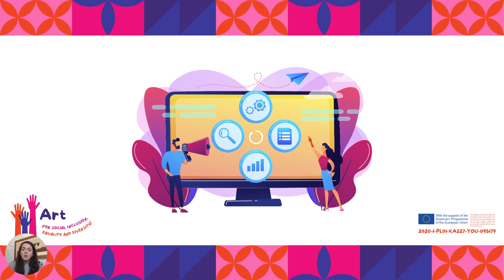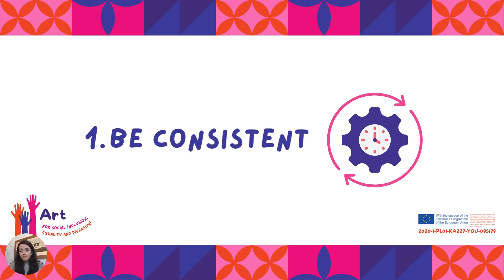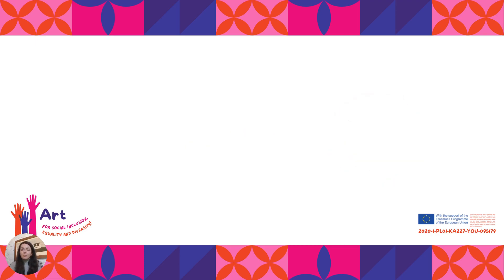Advocacy campaigns may sound daunting at first but they don't have to be. Let's check out some tips on how to build a successful social media campaign. Number one: be consistent. Putting out regular quality content will give you a wider audience and keep them wanting to see more.